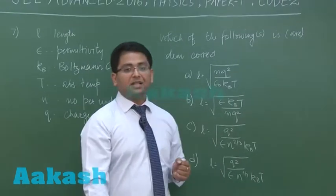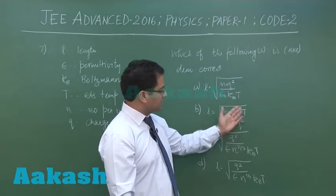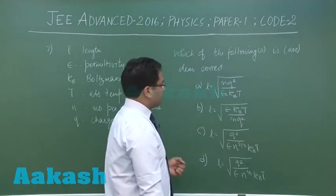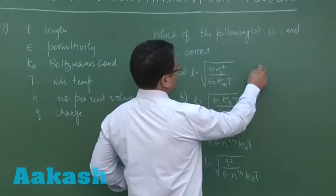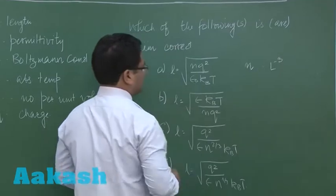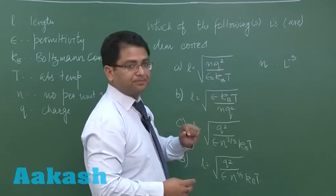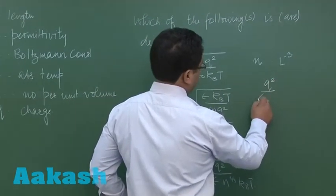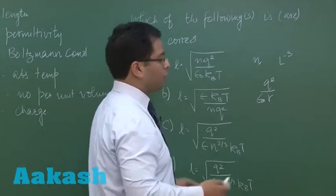Now at this particular level, it is not advised that you start calculating the dimension of each and every variable and you start putting them on. You've got to go a bit trickily. If you see in this way, we need to verify the dimension of length and n has the dimension L⁻³ because that's number per unit volume. And there's a very nice way how you are going to tackle this thing.